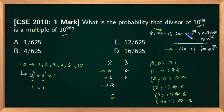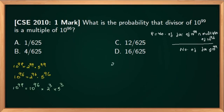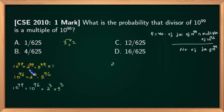Now 10 raised to 99 can be written as 2 raised to 99 into 5 raised to 99. I can take 0 twos, 1 two, 2 twos … all the way up to 99 twos — that is 100 different options for 2. Similarly, 100 different options for 5. So the total number of divisors of 10 raised to 99 will be 100 × 100 = 10,000.